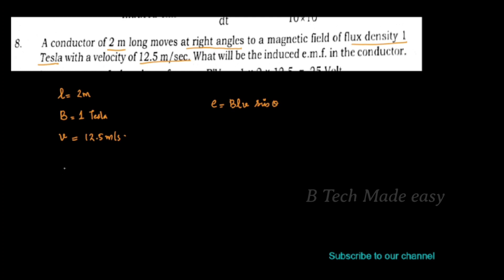Since the conductor is moving at right angle to the magnetic field, we set the angle θ equal to 90 degrees. So the equation becomes E = BLV sin 90°.